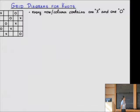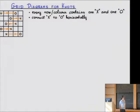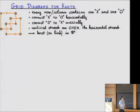A grid diagram is an n-by-n grid with the property that every column and every row contains one X and one O. From a grid diagram you can construct a knot by first connecting every X to an O horizontally, and then connecting every O to an X vertically. You make sure that the horizontal strand is the one that overcrosses the vertical one, and this gives you a knot — or in some cases a link — in R³ as a projection.